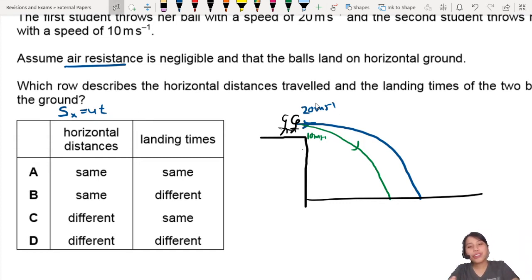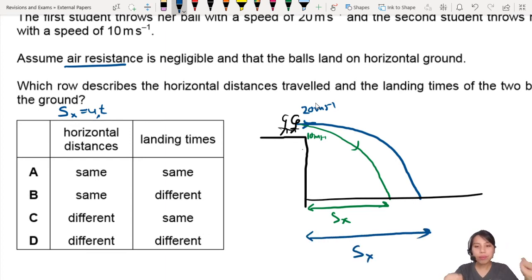So the range that is traveled horizontally, for example, this one is the horizontal range, depends on the initial speed or the initial horizontal speed. So the larger horizontal speed will give you a further range, which is this one over here. So the horizontal distance are different. So depends on how far you throw and things like that. So these two are out.